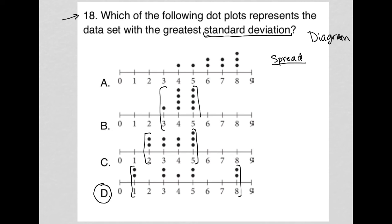Choice B is the smallest spread, by the way. So therefore, choice D must have the greatest standard deviation.